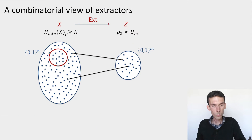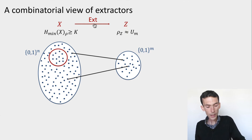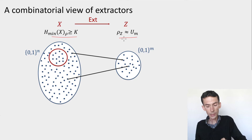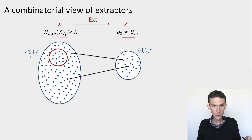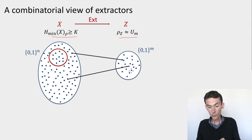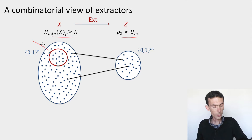To simplify things, in this module I'm going to ignore the side information e. So our task is to construct a function ext that maps a string x with high enough min entropy into a string z that looks like it's uniformly distributed. I can represent here in blue the whole universe on which x is distributed — all possible n-bit strings — and on the right hand side all possible m-bit strings, the universe for z. What does it mean that x has min entropy at least k? As a first approximation, you can think of x as being uniformly distributed on a subset of the whole universe of size 2 to the k.